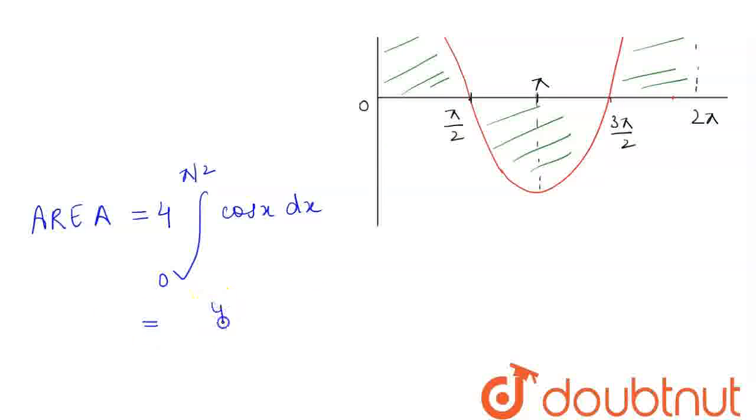Now, we know that the integration of cos x is sin x. So, we will get 4 sin x with limits from 0 to π by 2.